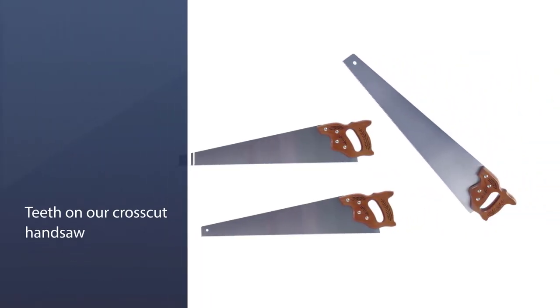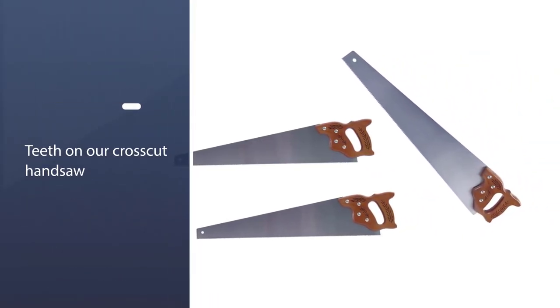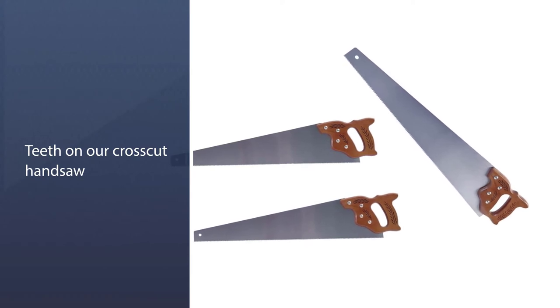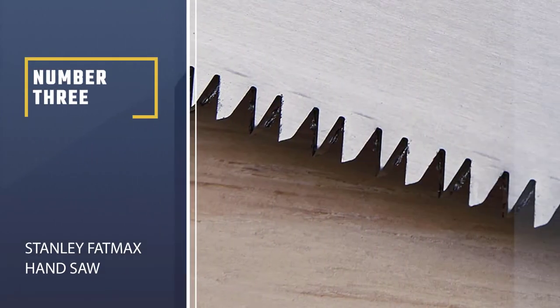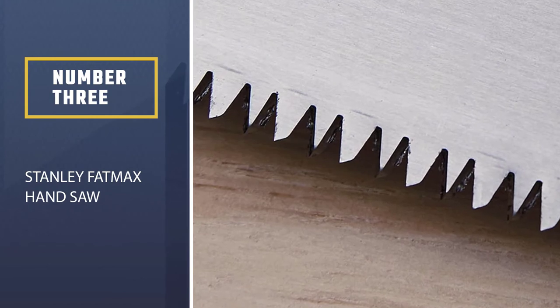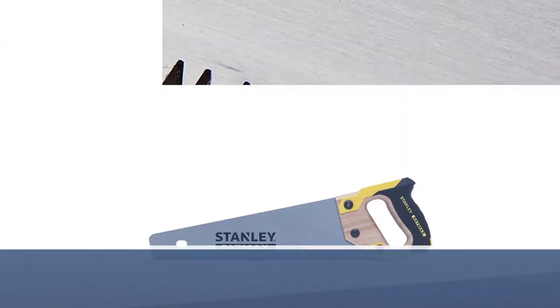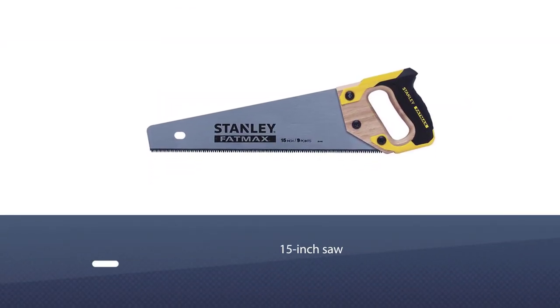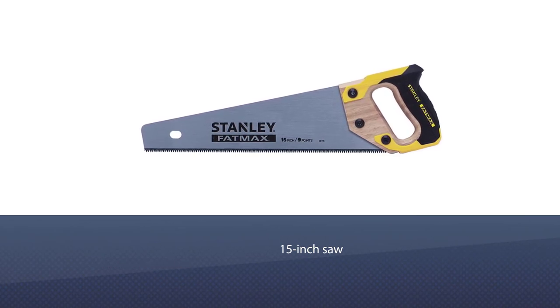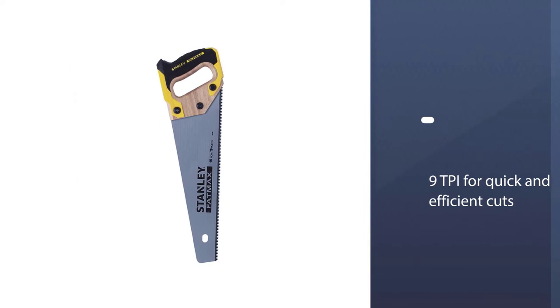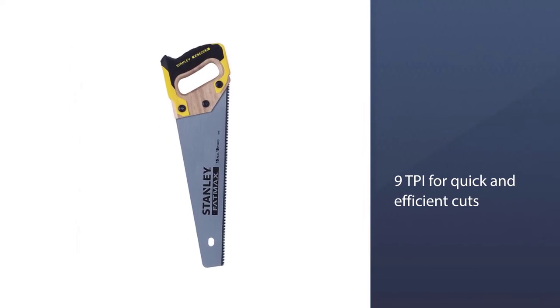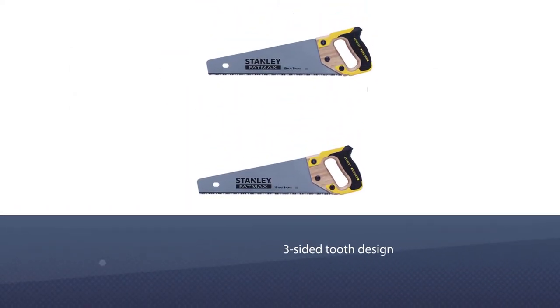Number three: Stanley FatMax Hand Saw. When you need a good saw but don't have the money for top-of-the-line models, the Stanley 20-045 15-inch FatMax hand saw is for you. Stanley is known for having quality tools, and this saw fits that bill perfectly. This 15-inch saw has 9 TPI for quick and efficient cuts.